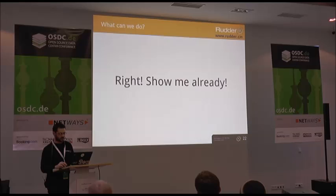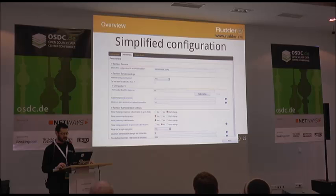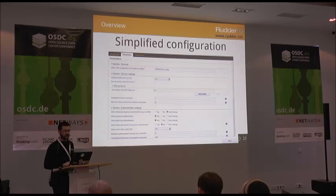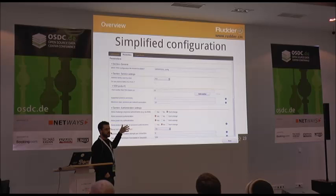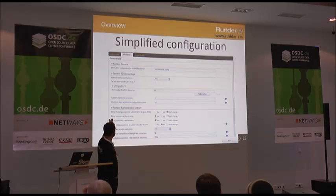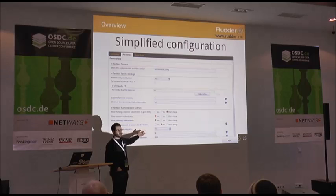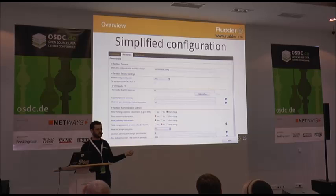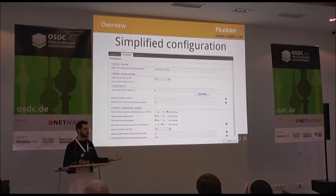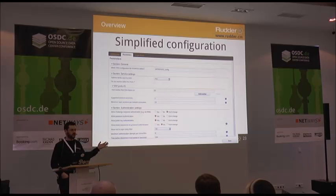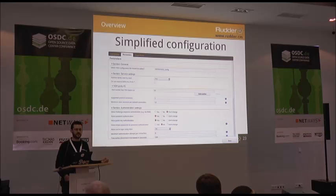I'm going to start with some screenshots because my demo broke. This is what a simple screen in Rudder looks like — configuring an SSH service. All these variables come up and you can edit the parameters in your SSH service through a web interface. You don't need to know how CFEngine or Rudder works. You can decide whether to have password authentication — yes or no, simple as that. All of these settings are exposed because someone chose to expose them for their users.